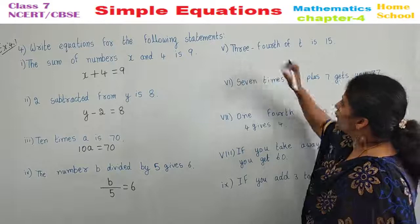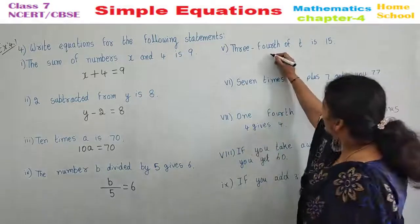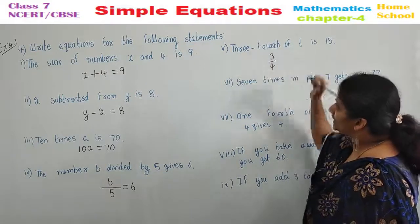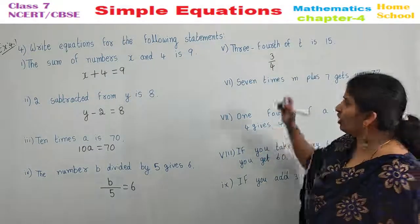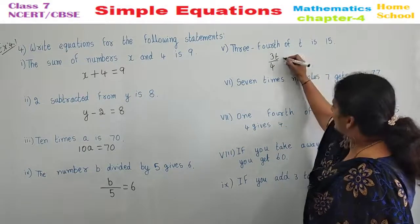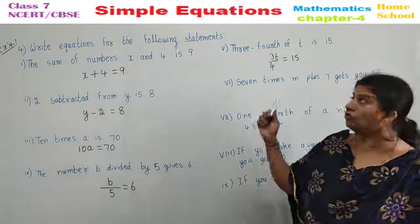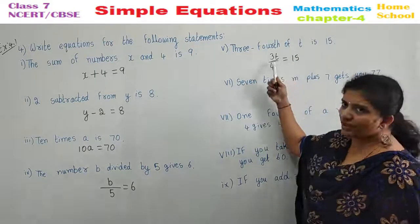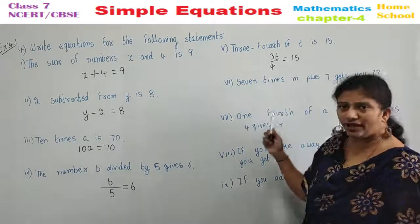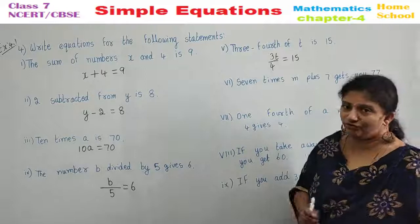Second one. 3 fourth. 3 fourth means 3 by 4. 3 fourth of T. Of what? 3 fourth of what? T. 3T by 4 is 15. 3 fourth of T. 3 by 4 into T you can write. Or 3T by 4 also you can write. 3T by 4 is equal to 15.